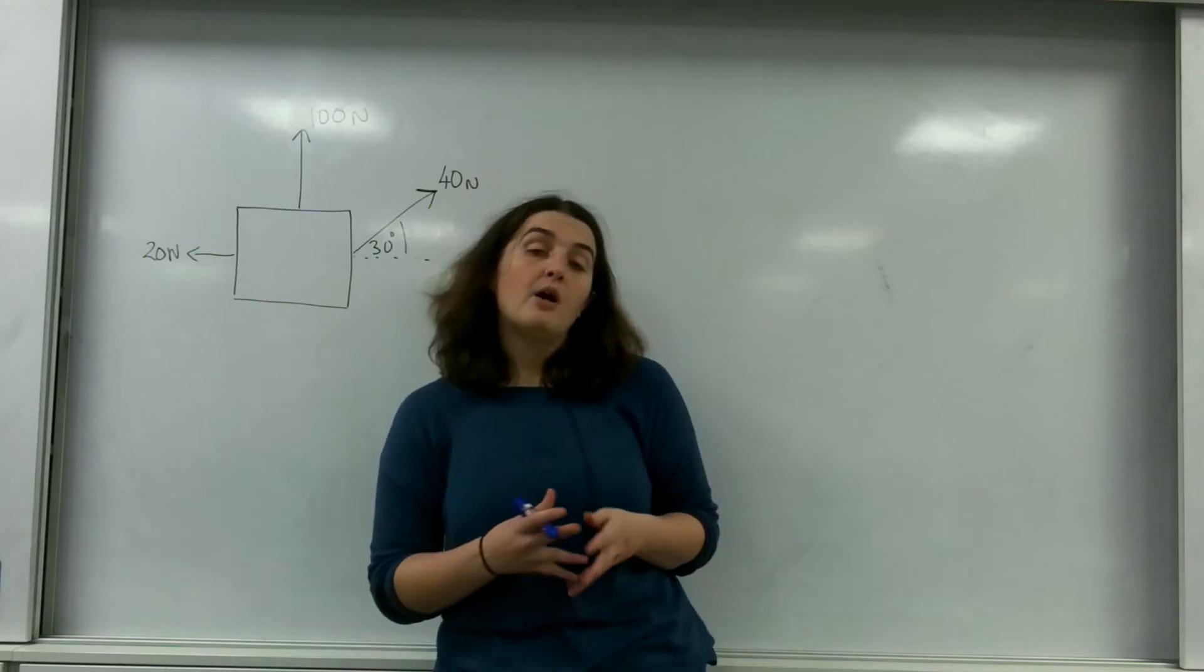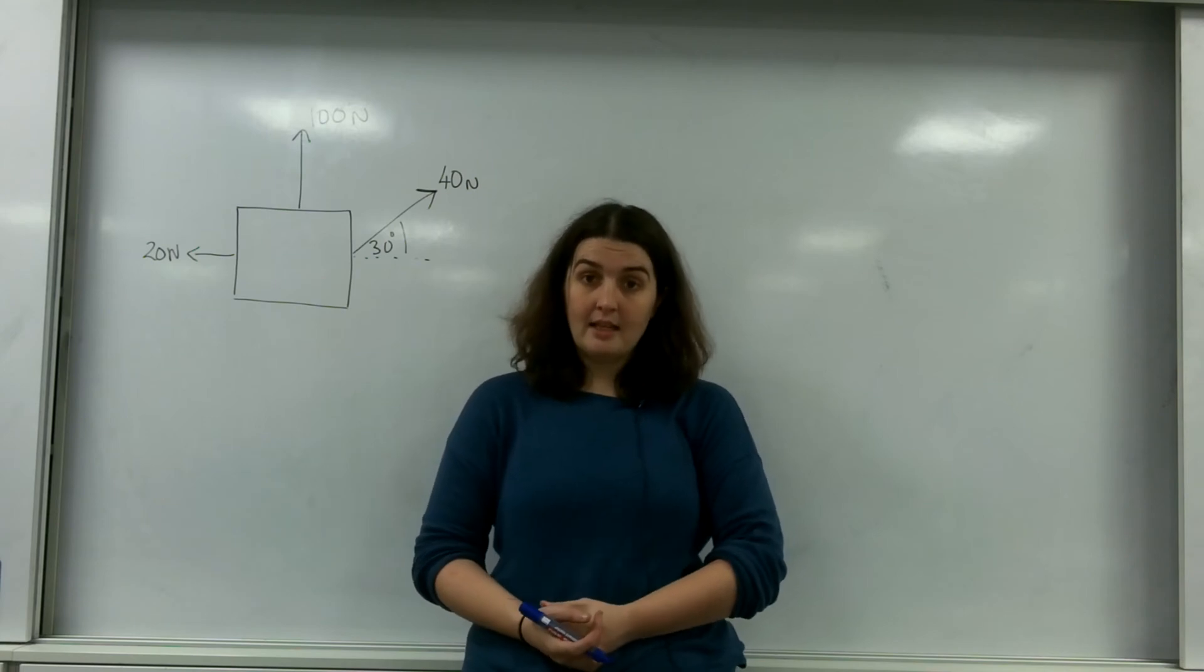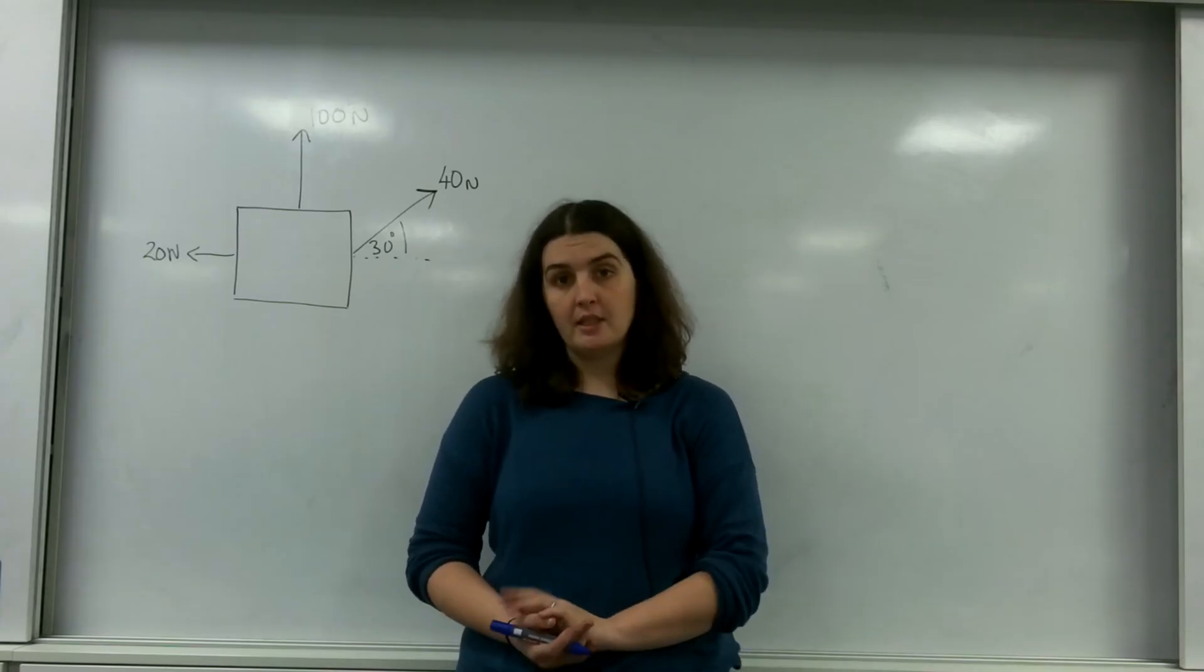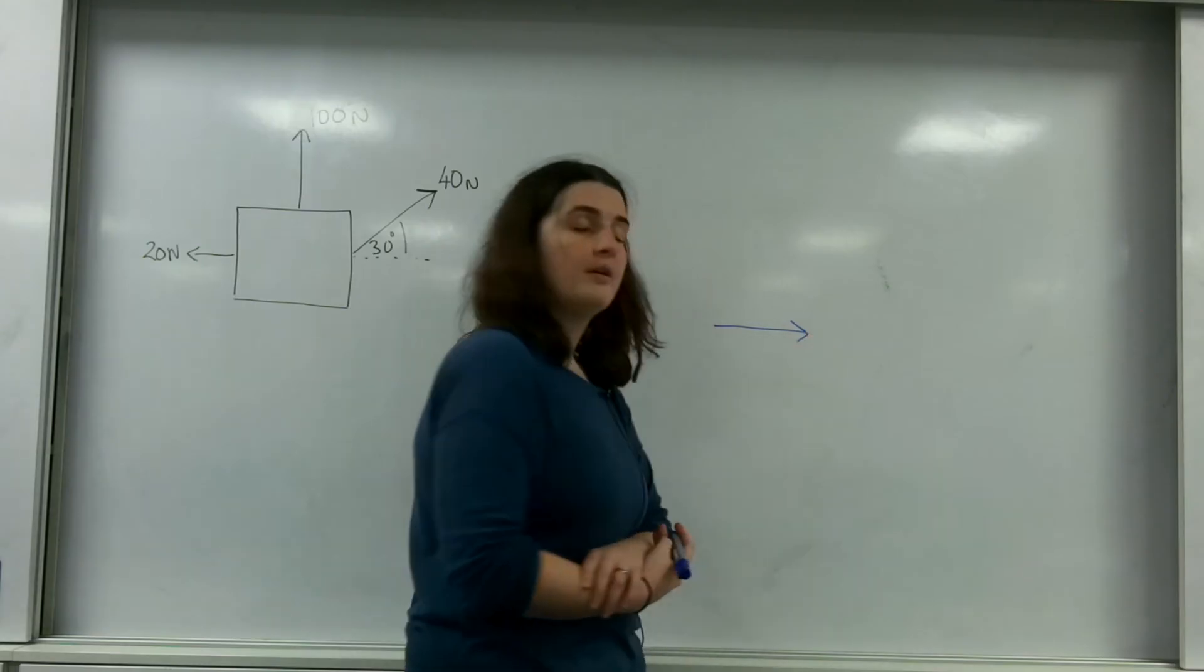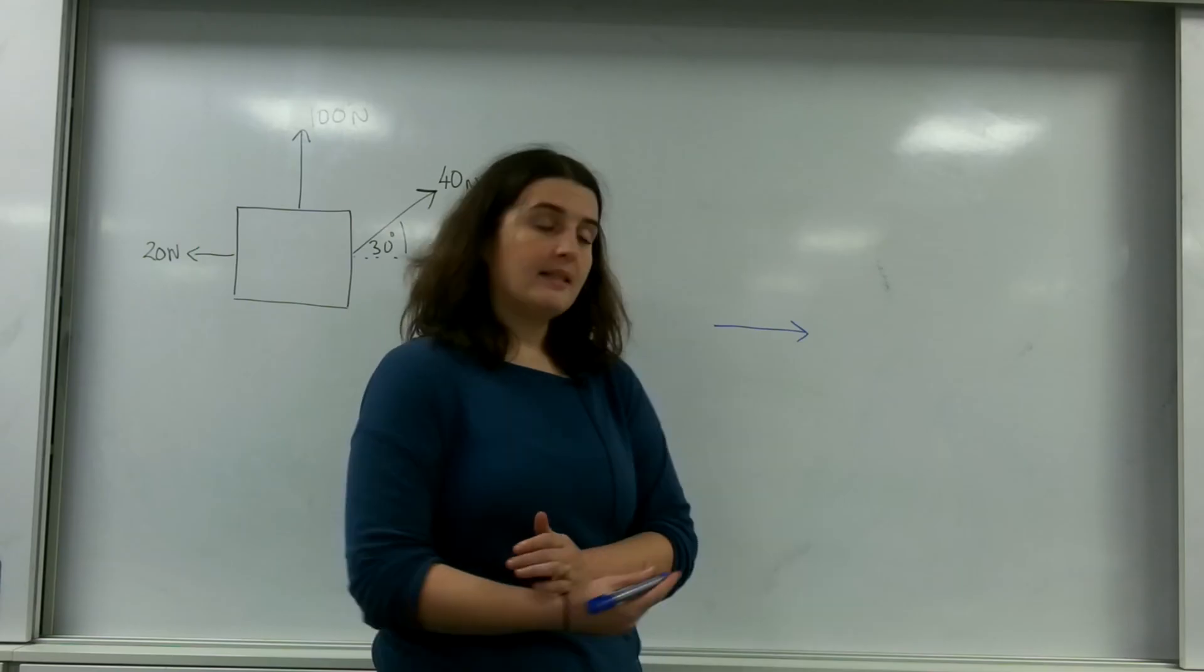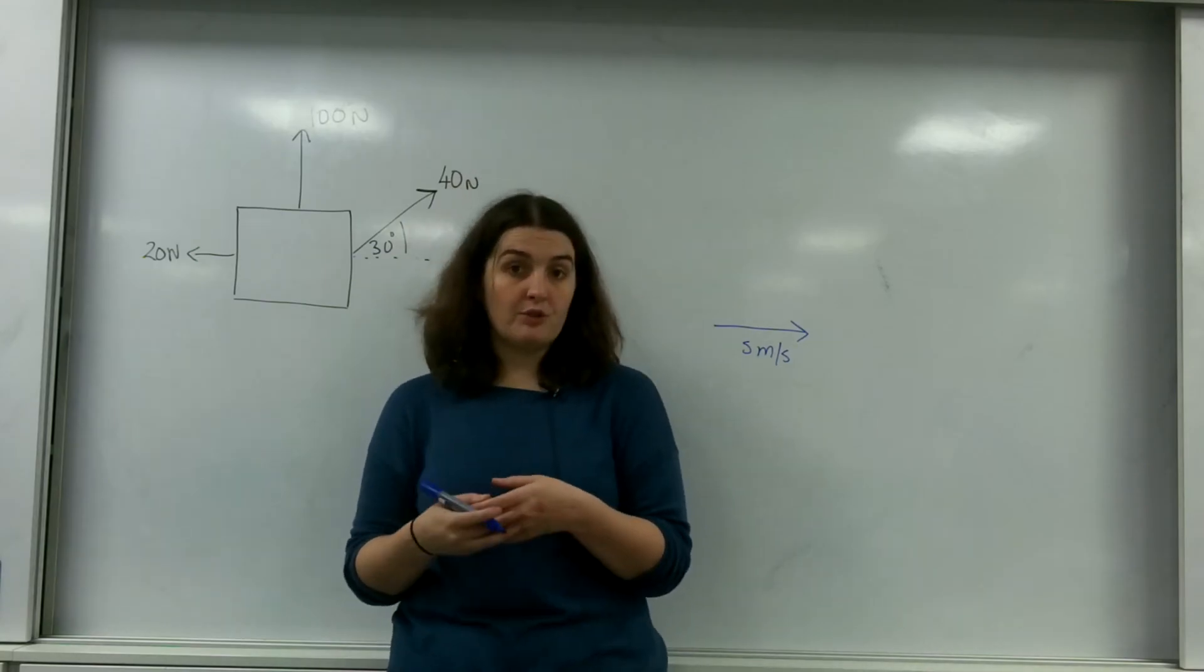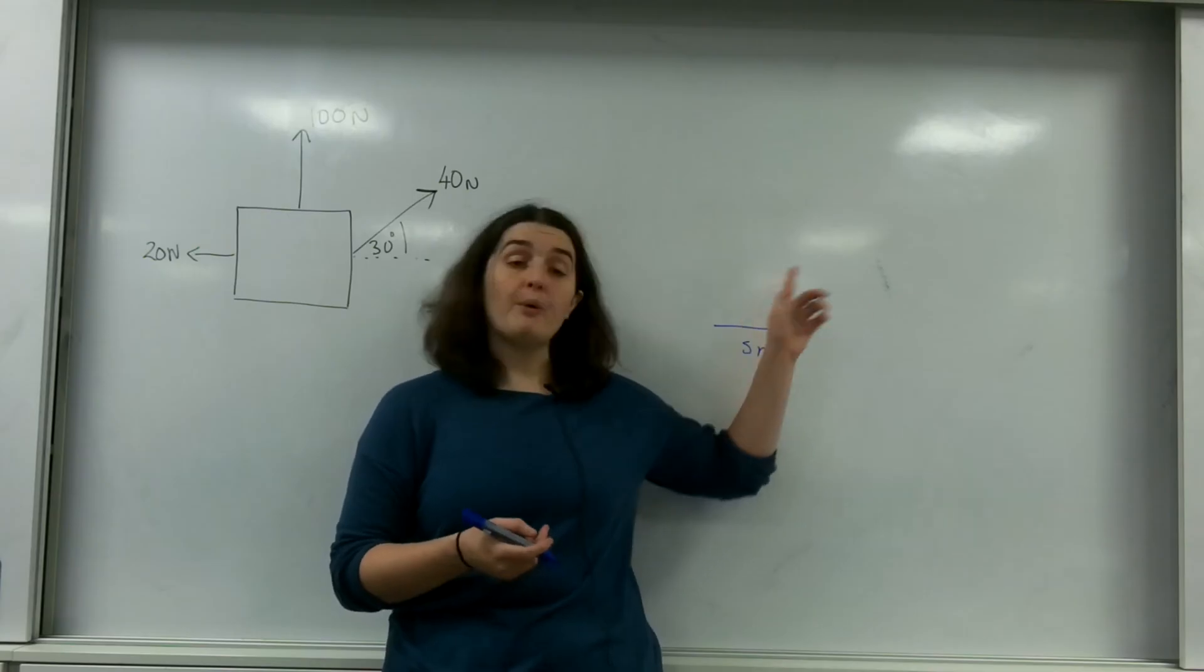But firstly I want to remind you about what a vector is. A vector is something with both a magnitude and a direction, and we can represent this using an arrow. This arrow can represent all sorts of things and it could represent my velocity.